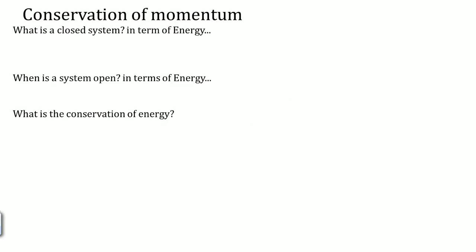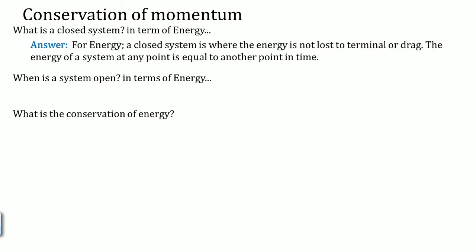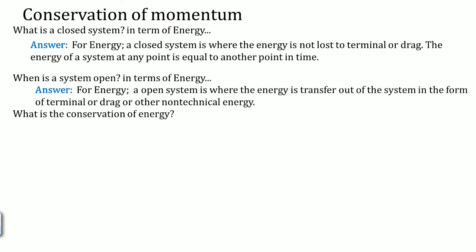What is conservation of momentum? Let's look back at energy first. What is a closed system in terms of energy? A closed system is where energy is not lost to thermal or drag — the energy of the system at any point is equal to the energy at any other point in time. An open system is where energy is actually transferred out of the system in the form of thermal, drag, or other mechanical energy like sound or chemical.